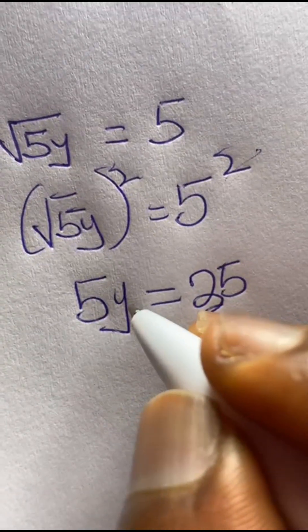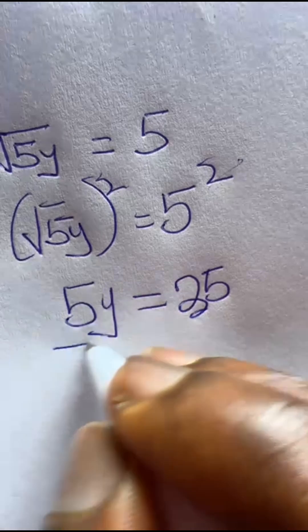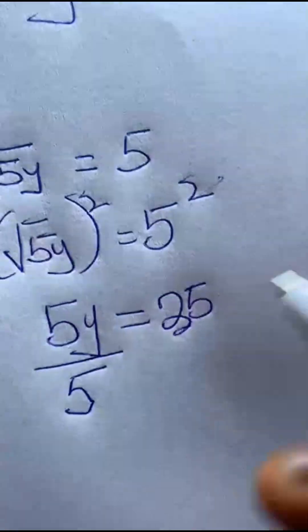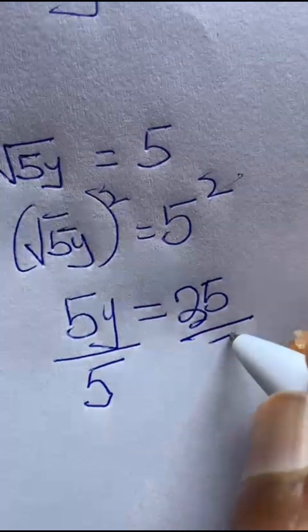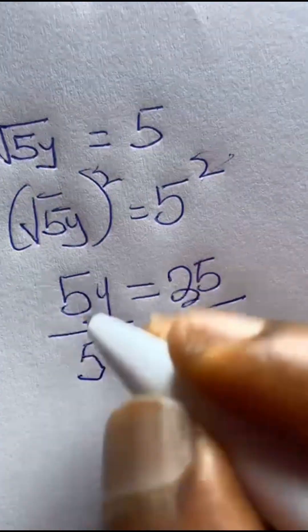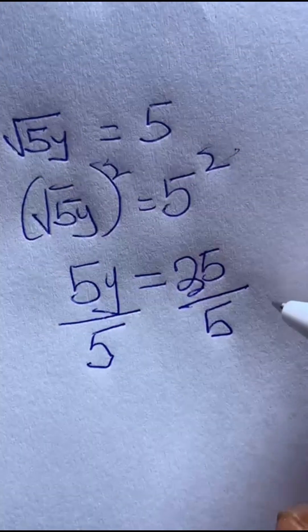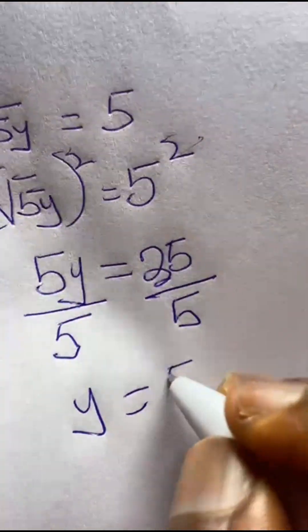So what you do, I'm looking for y. I need to eliminate this guy so you divide on both sides by 5. So this takes away this. Now this into this is what I got. Y equals 5.